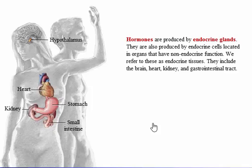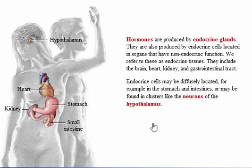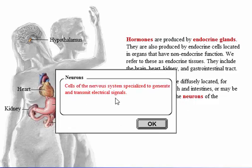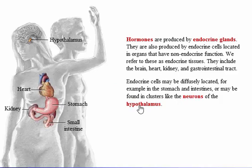Endocrine tissues include the brain, heart, kidney, and gastrointestinal tract. Endocrine cells may be diffusely located — for example, in the stomach and intestines — or may be found in clusters like the neurons of the hypothalamus.